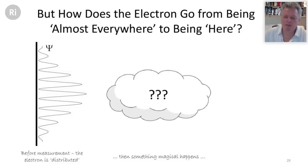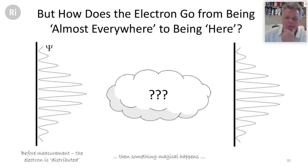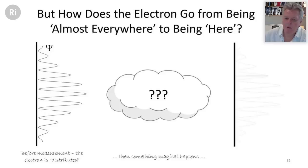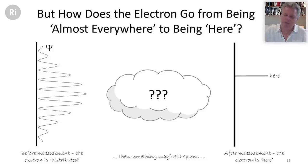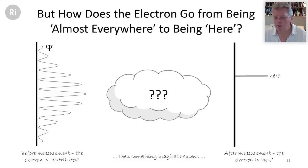To get from before to after the measurement, something almost magical needs to happen. The wave function needs to somehow collapse down so that the electron is recorded as a single dot. Before the measurement, the electron is almost anywhere where the amplitude of the wave function is not zero. After the measurement, we find it at one specific location. The electron is an elementary particle — you can't break it up or divide it. The question is: how does that happen?